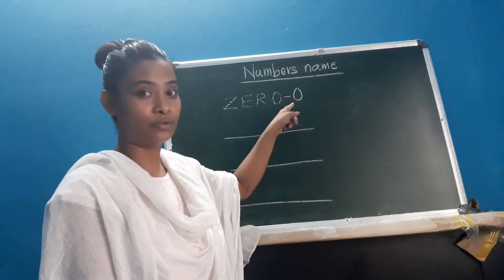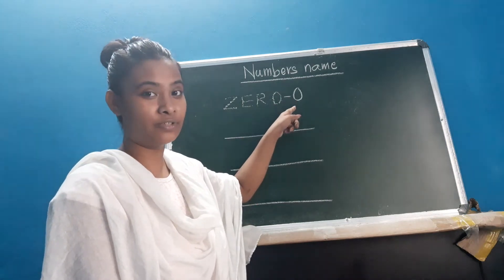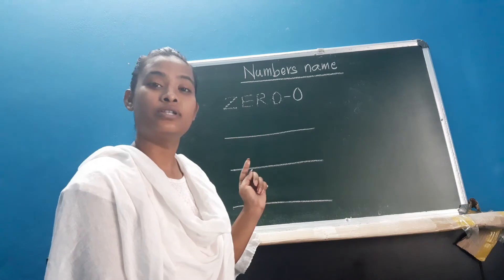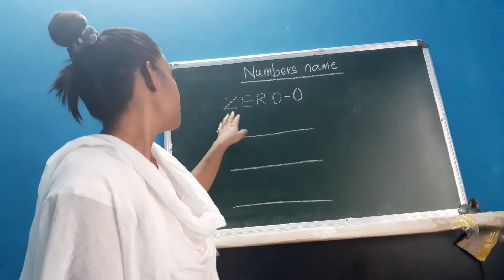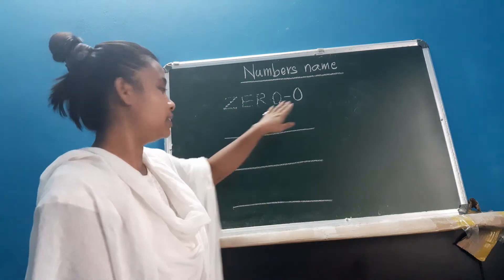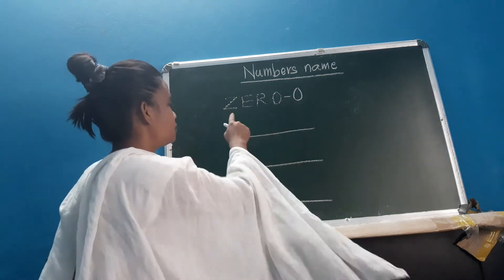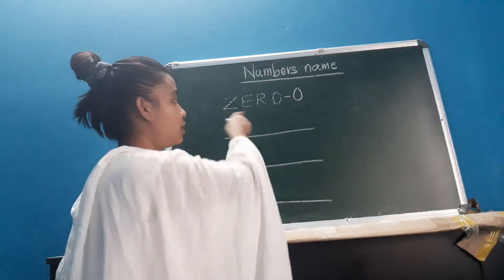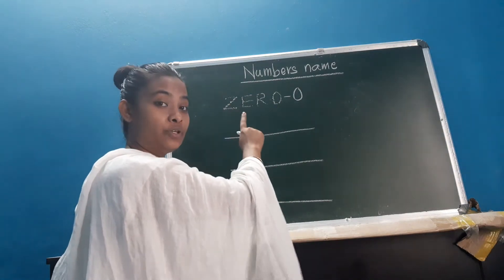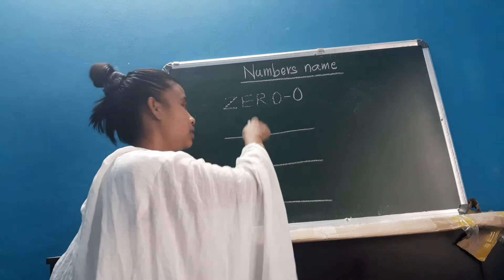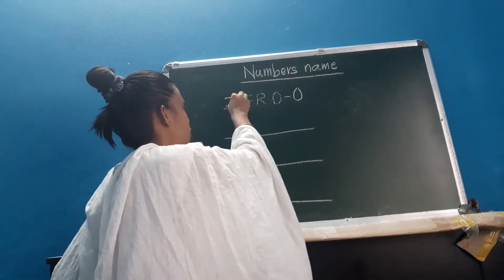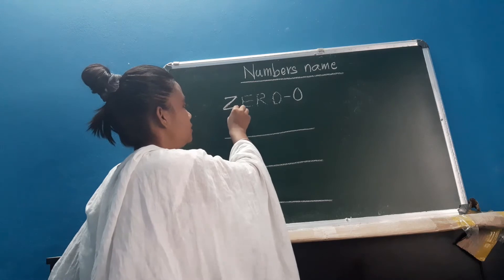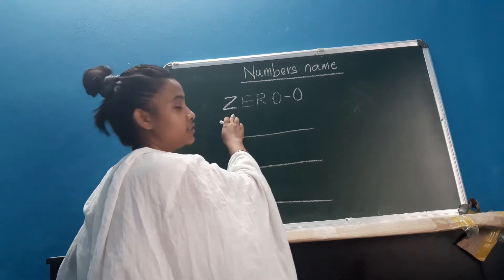So first number is 0. Isn't it, children? The number always starts from 0. So here is the spelling of 0. First you can see here there is a tiny dot. You have to join these dots, just like the previous one. Join these dots, children, and see which letter appears.